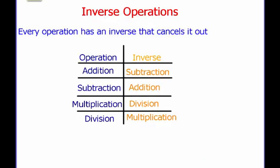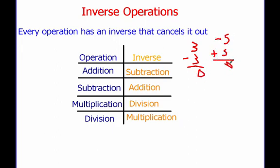First, we need to discuss what are called inverse operations. Inverse operations are just operations that cancel each other out. Every operation has one. For example, addition and subtraction cancel each other out. If I have 3 and I subtract 3, I get 0. If I have negative 5 and I add 5, I also get 0. These cancel each other out, so they're inverse operations.